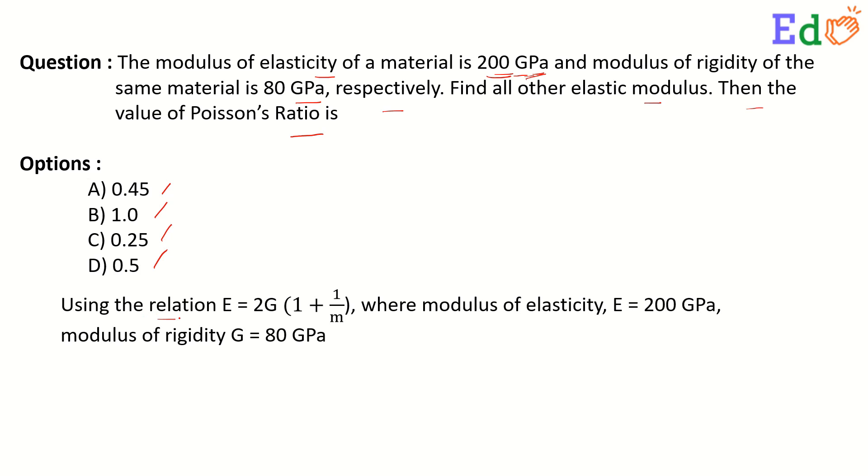Using the relation E is equal to 2G, where E is the modulus of elasticity and G is the modulus of rigidity, into 1 plus 1 by M.